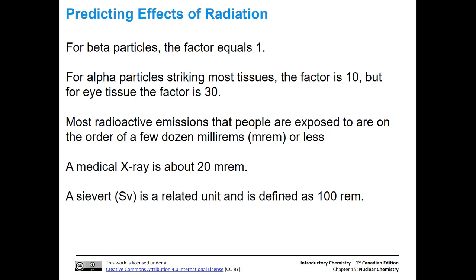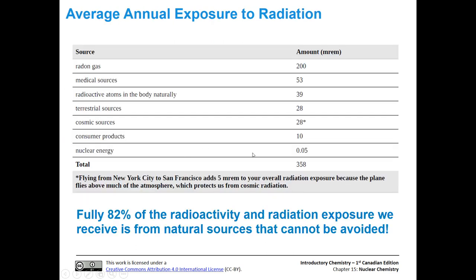Most radioactive emissions people are exposed to are on the order of a few dozen millirems — one one-thousandth of a REM. A medical X-ray is about 20 millirem. The Sievert, abbreviated as capital Sv, is a related unit equal to 100 REM.